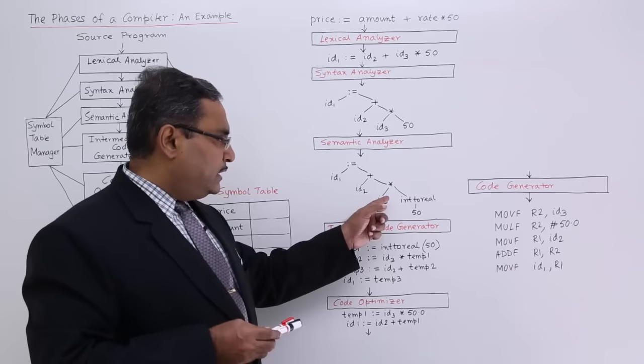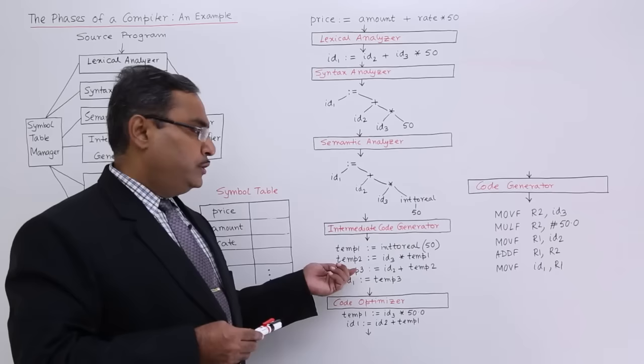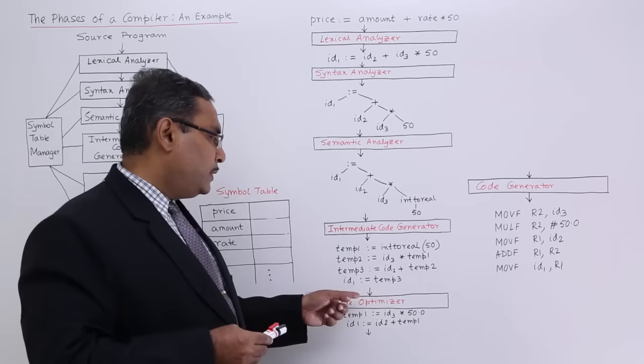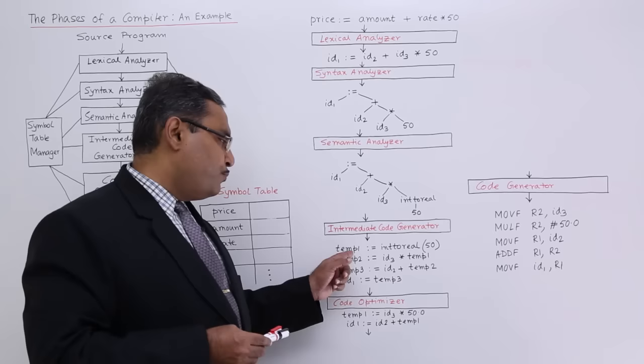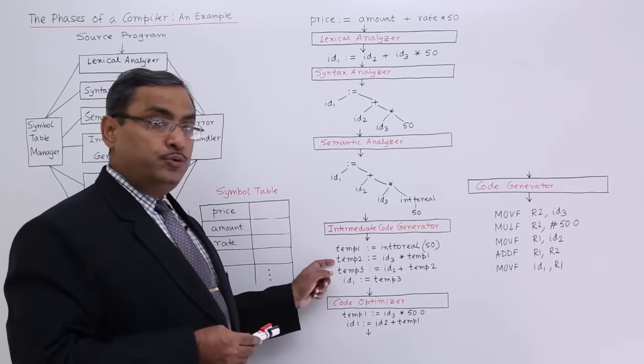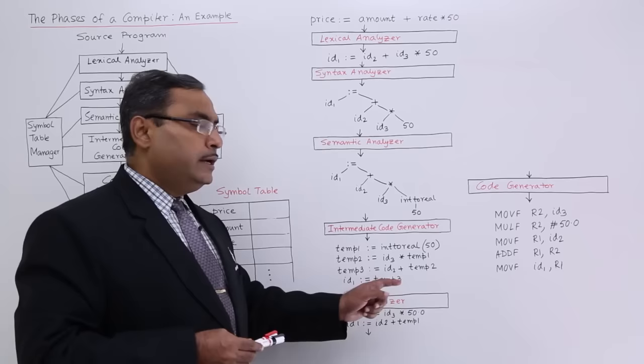The intermediate code generator takes this as input and produces statements in a different format using three-address statements, where we have a maximum of three addresses. The generated code is: temp1 := inttoreal(50), temp2 := id3 * temp1, temp3 := id2 + temp2, id1 := temp3. This is the intermediate code generated.